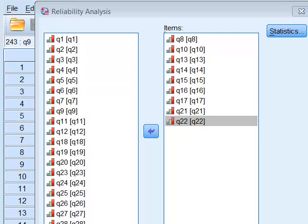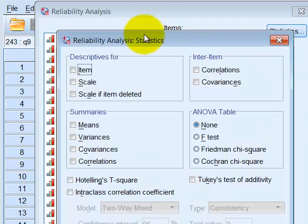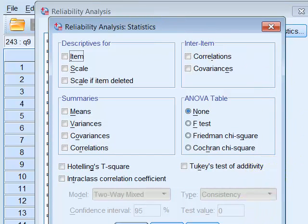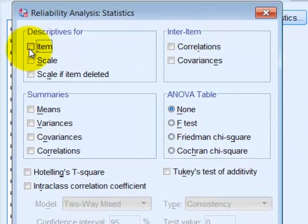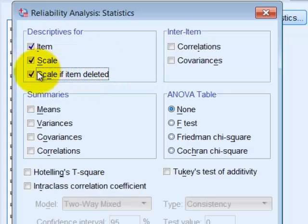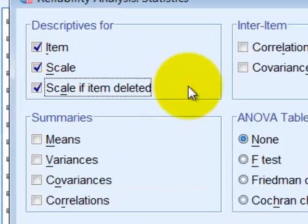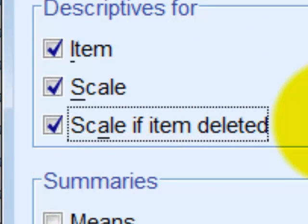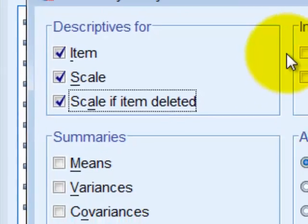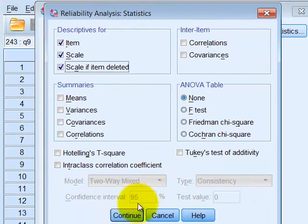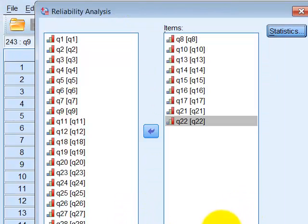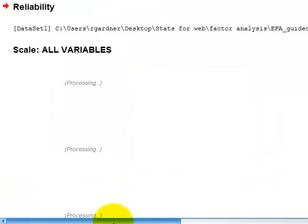And we're only going to do this first one. The only statistic we need is item, scale, scale if deleted. This last one is very important. It will show you what your Cronbach's Alpha will be if you took out one of the questions. So this is a big one. And those are the only ones you need here. We're going to click Continue. And we're going to click OK.